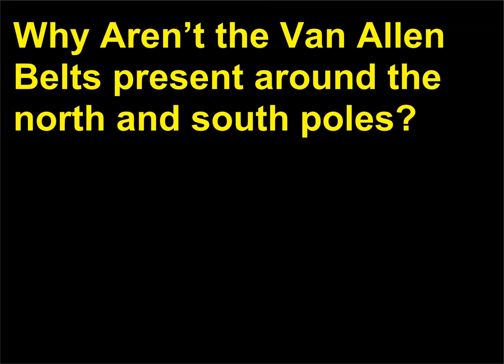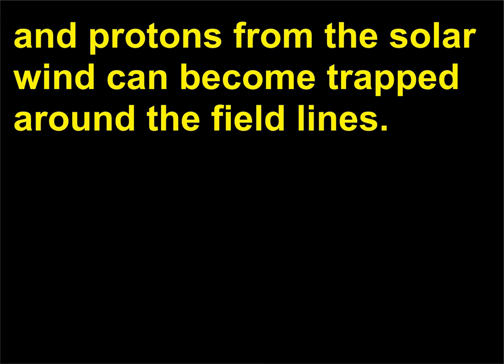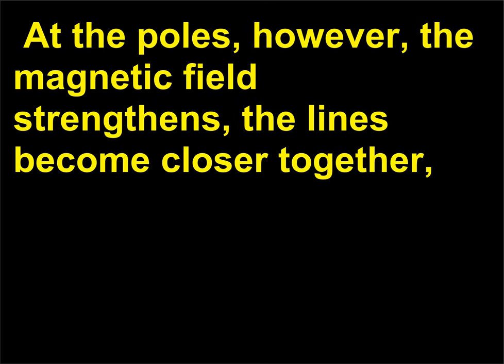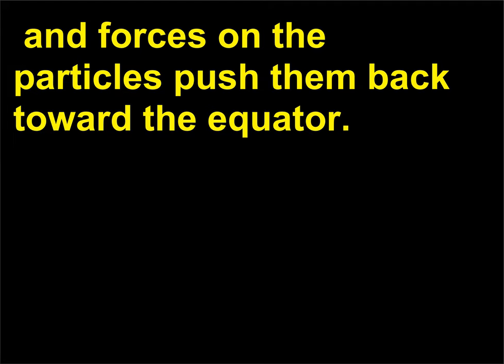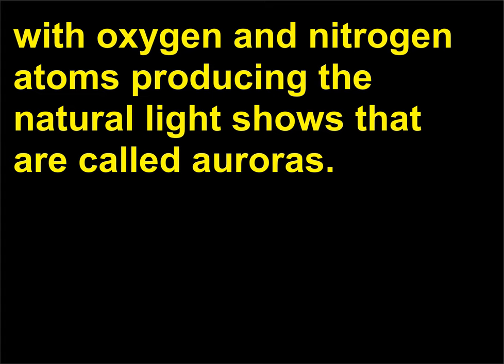Why aren't the Van Allen belts present around the North and South Poles? At the equator, the magnetic field is parallel to the ground and the electrons and protons from the solar wind can become trapped around the field lines. At the poles, however, the magnetic field strengthens and the lines become closer together, and forces on the particles push them back toward the equator. Some of the most energetic particles are able to penetrate the atmosphere where they interact with oxygen and nitrogen atoms, producing the natural light shows that are called auroras.